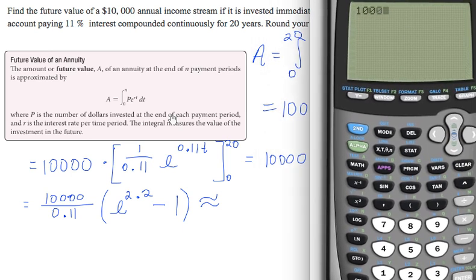10,000, actually divided by 0.11 times, parentheses, e, the second e there, to the 2.2, close parentheses, minus 1. And we get $729,546.68. I would round right there.